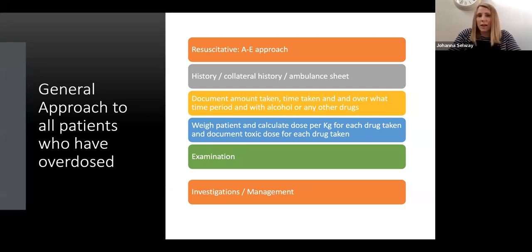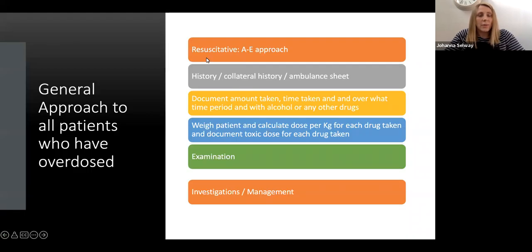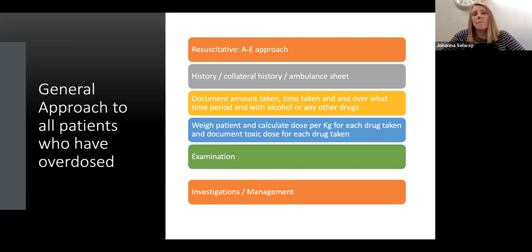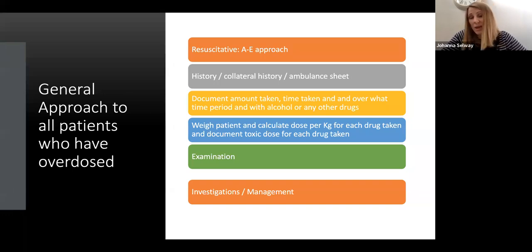If you've passed that stage and you're happy with your ABCDE assessment, you can proceed to take a history. It's very important in these cases that if you're able to get a full account from the patient, great — but it's even better if you can get a collateral history. Often patients are found with empty packets, which can be a valuable insight into what they've taken. If the ambulance crew bring them in, you can examine those packets. Sometimes though, if there's a delay in the ED, the ambulance crew may have gone.